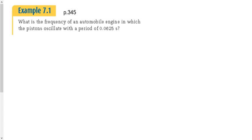Quick example: what is the frequency of an automobile engine in which the pistons oscillate with a period of 0.0625 seconds? What does oscillate mean? Back and forth — oscillatory motion is just Simple Harmonic Motion. The back and forth motion of the pistons in the car engine: gasoline burns and creates pressure which pushes the piston up and down, back and forth, several thousand times per minute. The period — the time for one up and down motion — is 0.0625 seconds, and we want to find the frequency.